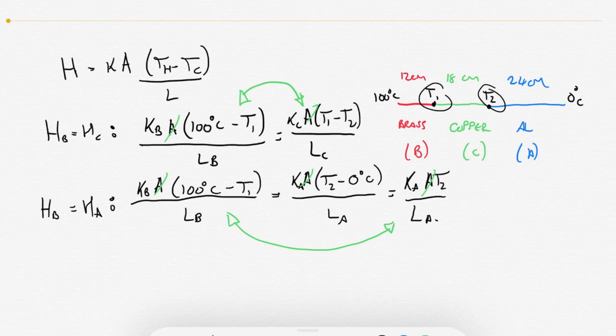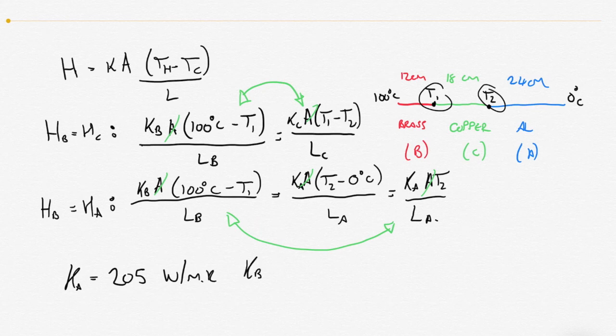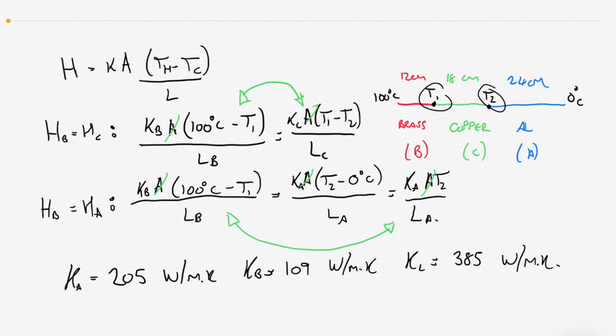Before doing that, we need to know the thermal conductivity. The thermal conductivity of aluminum is 205 watts per meter per Kelvin. The thermal conductivity of brass is 109 watts per meter per Kelvin. And the thermal conductivity of copper is 385 watts per meter per Kelvin. We've got our lengths, we've got our thermal conductivities. We do our simultaneous equations and solve for T1 and T2. And when we do that, we get T1 is equal to 59.809 degrees Celsius. And T2 is 42.740.